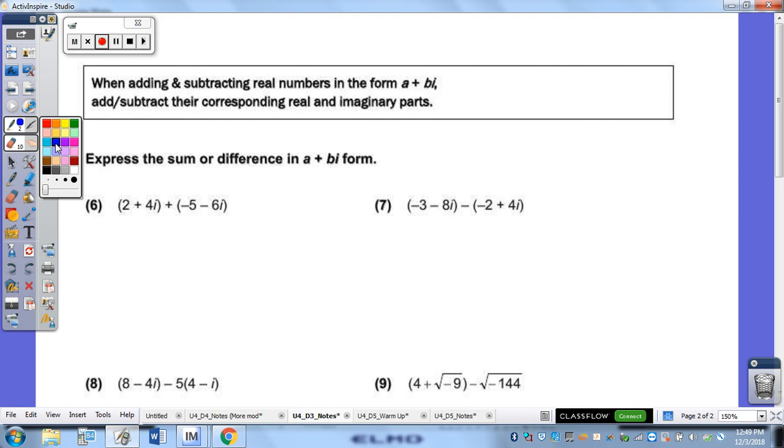So, let's try a few on the back. We are finding the sum or the difference. So, that means we're just adding them. There's a little plus sign right here in the middle. So, we've got to do our like term. So, 2 plus a negative 5 would give me a negative 3. 4I plus a negative 6I would give us negative 2I. So, all you're doing is adding or subtracting your like terms.